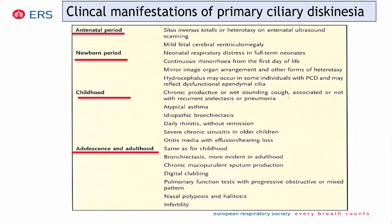In this slide you can see the clinical manifestations associated to the age of the patient — typical findings in the antenatal period, newborn period, childhood, adolescence, and adulthood. In childhood and adolescence the symptoms are very similar. There are some characteristic symptoms in the newborn period: for example, full-term neonates presenting respiratory distress without any clinical reason. In the antenatal period, a child with fetal cerebral ventriculomegaly or with situs inversus totalis. Remember that 50% of patients at the age of eight years may develop bronchiectasis if they are not well followed.